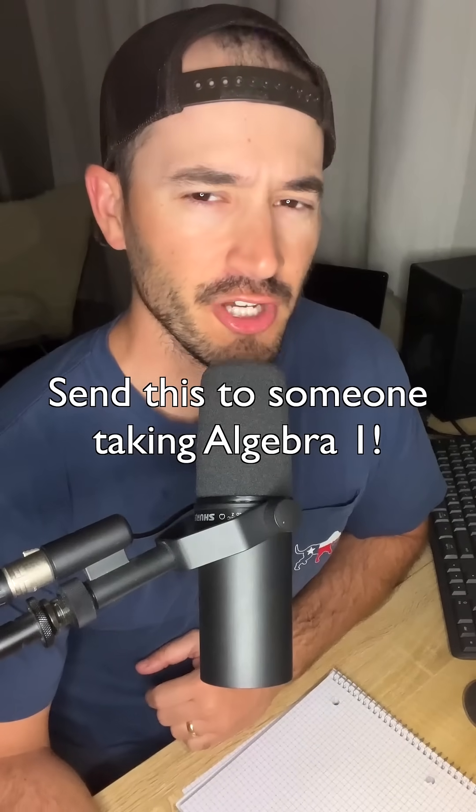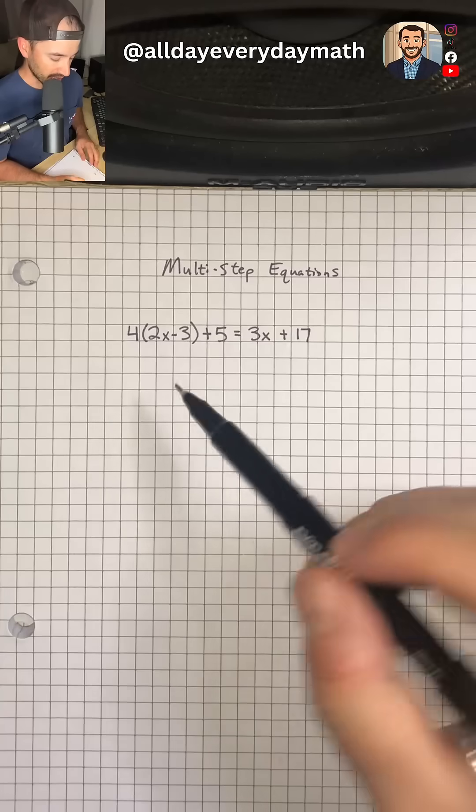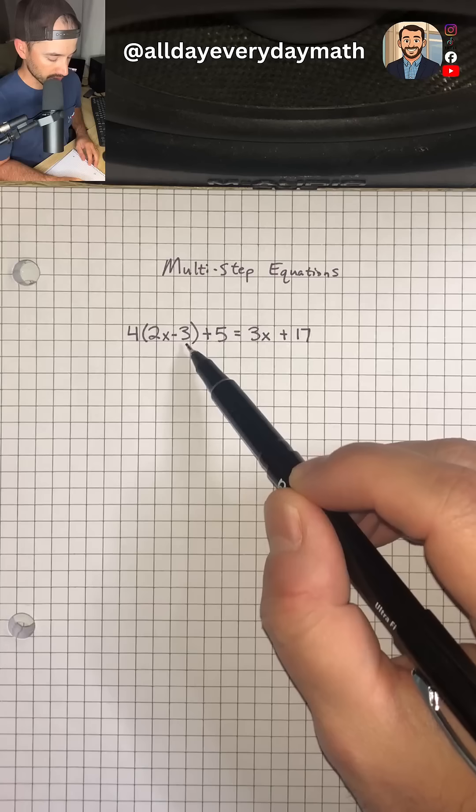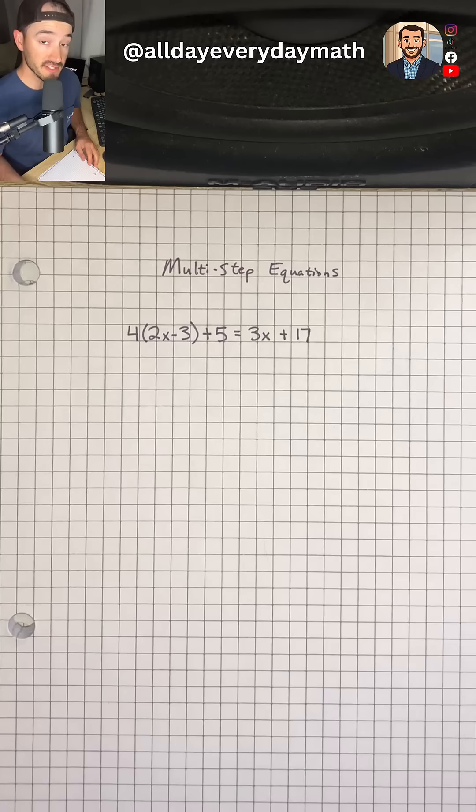If you're taking Algebra 1 this year and you're not sure how to solve multi-step equations, don't worry, I got you. So we have the multi-step equation 4 times parentheses 2x minus 3 plus 5 is equal to 3x plus 17. We want to solve for x.